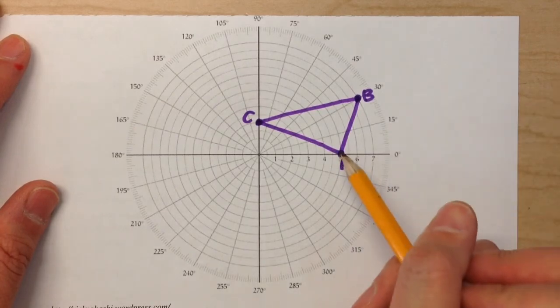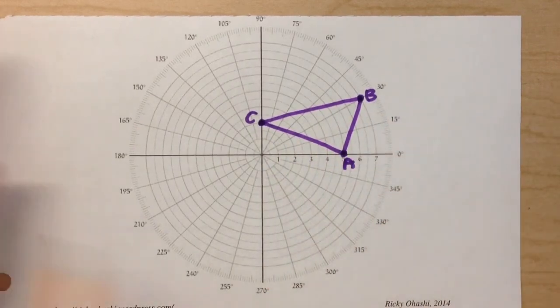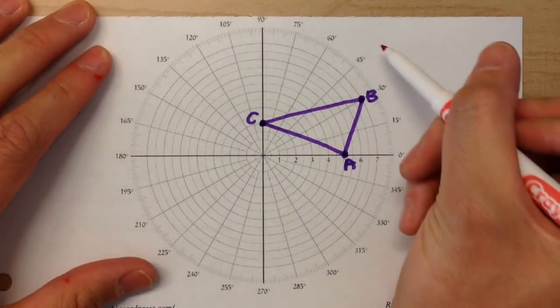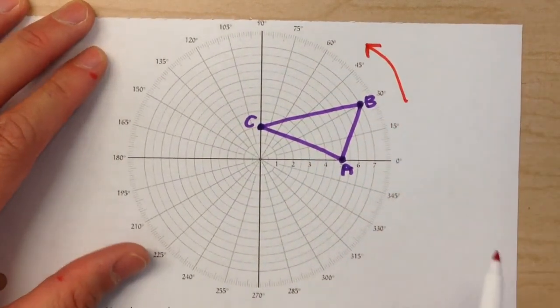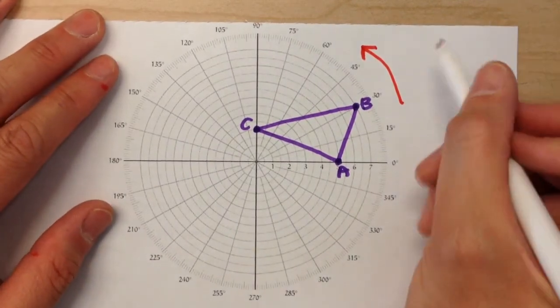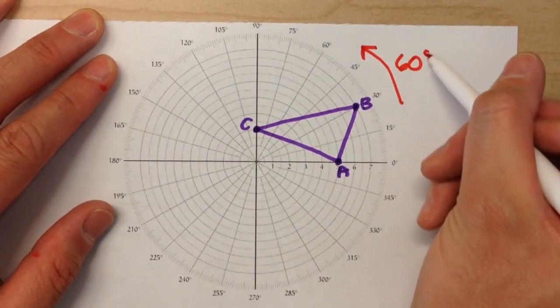So I've got a triangle here, triangle ABC, and we're going to rotate it. Let's say we're going to rotate it counterclockwise, because today we're just going to rotate everything counterclockwise for simplicity. And let's say we want to rotate it 60 degrees.